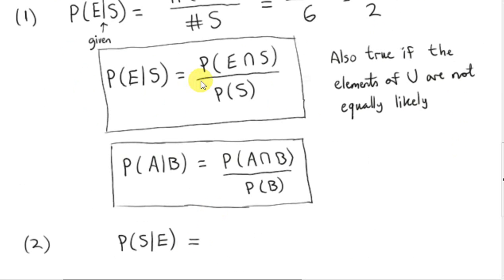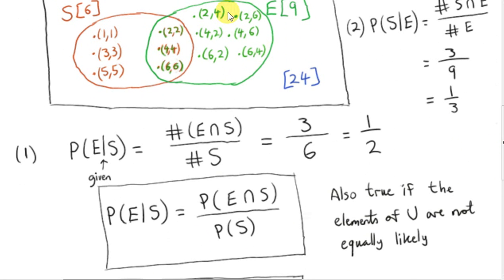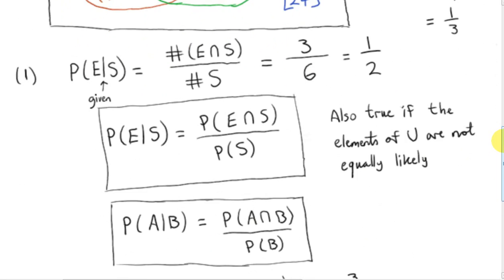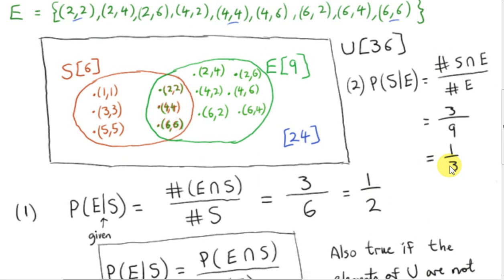Now let's apply the formula. We need the probability of the intersection of the two events divided by the probability of the event conditioned on, which is E. The probability of the intersection is 3 over 36, and the probability of event E is 9 over 36. Multiplying above and below by 36 gives one third. The important point is that this probability is not the same as the previous one — one answer is one third and the other is one half.